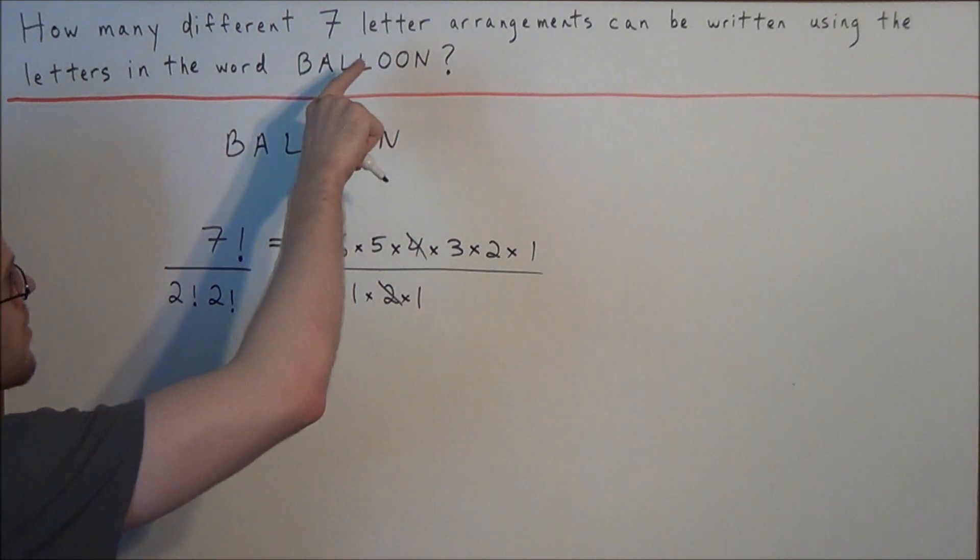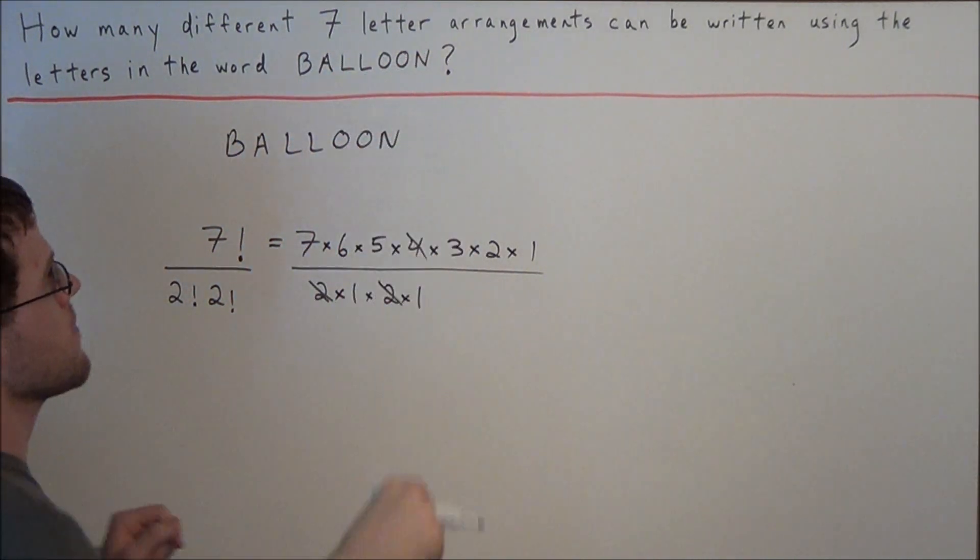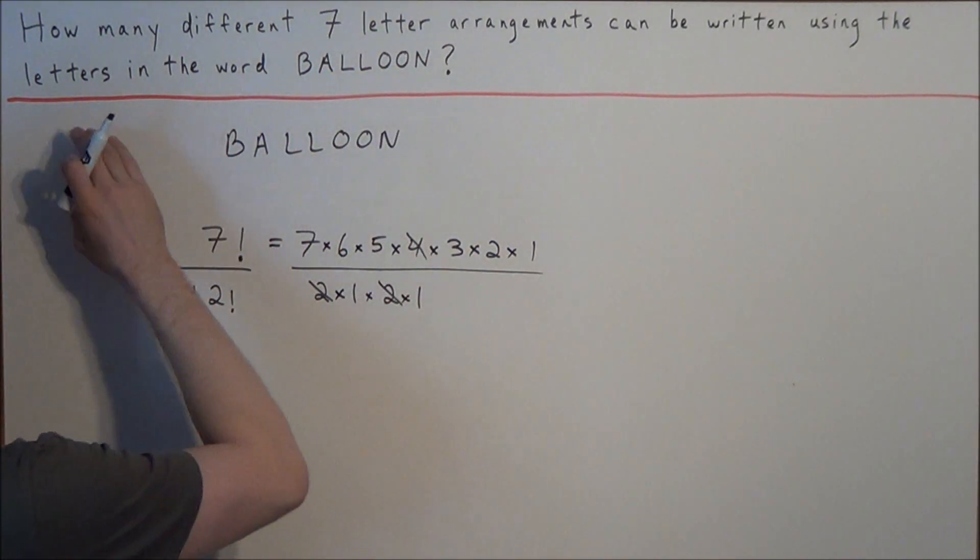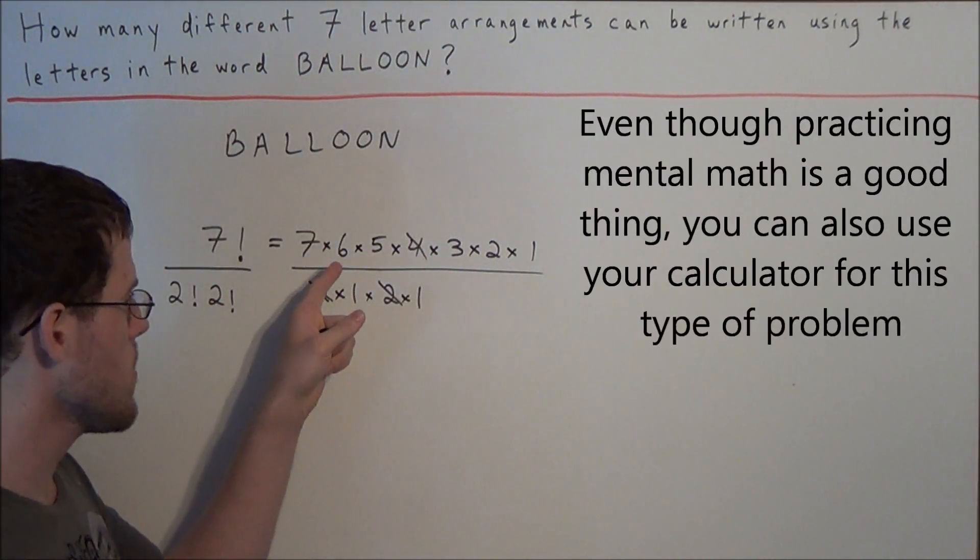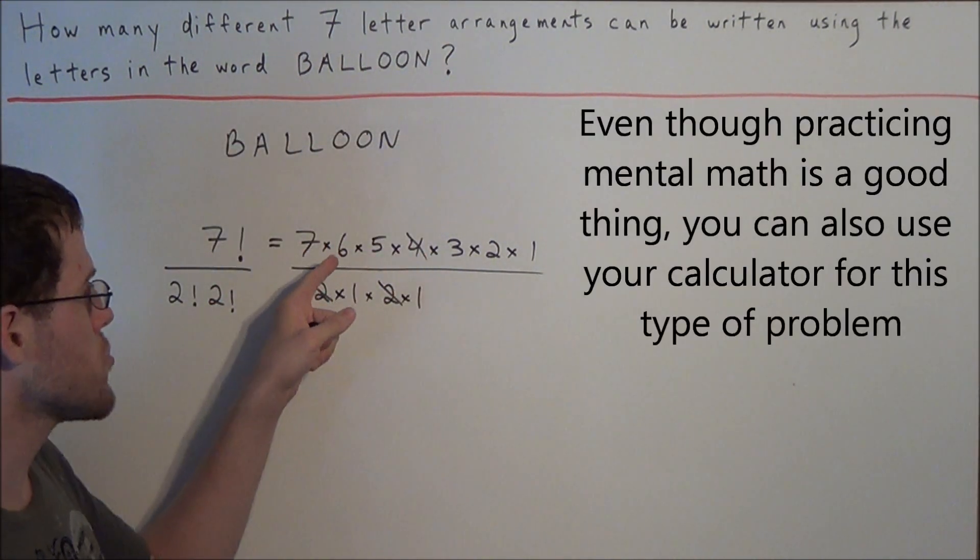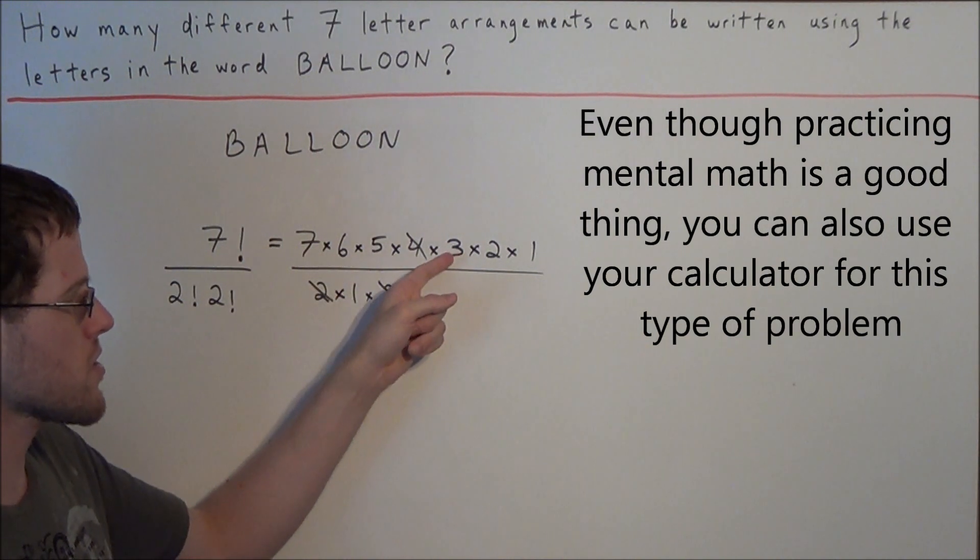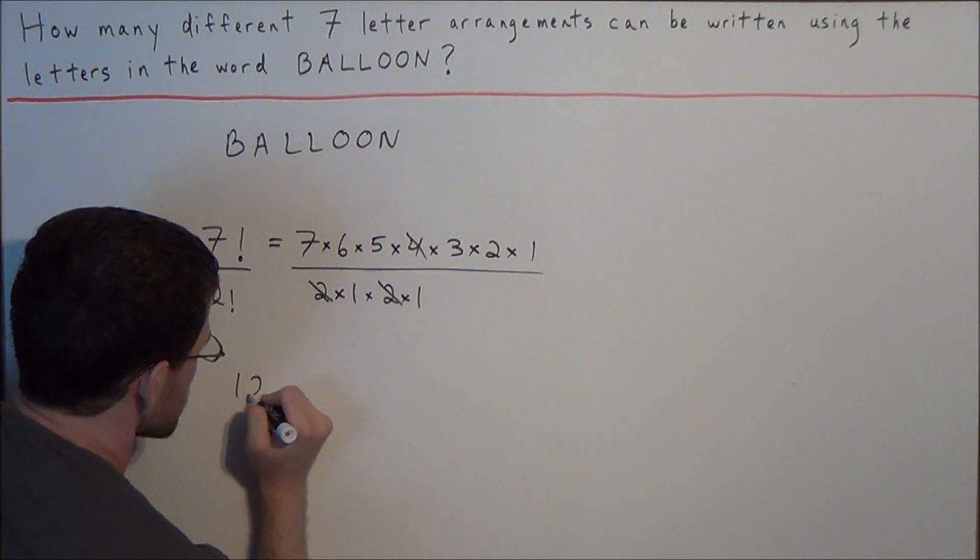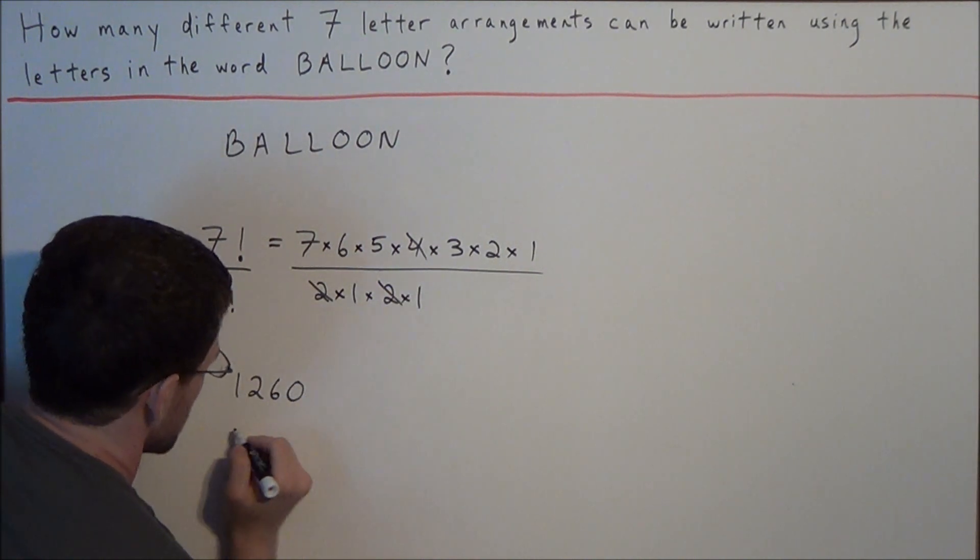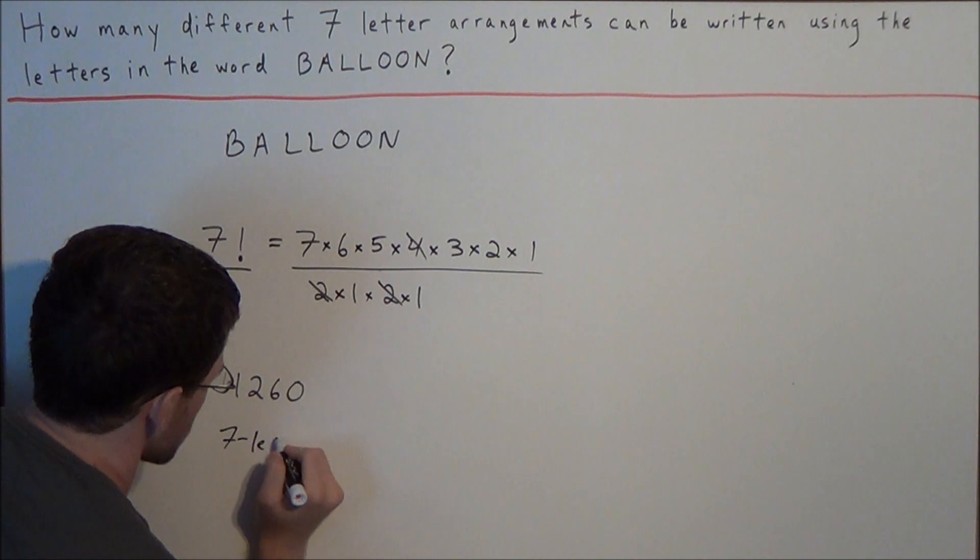So now if we want to find our answer, the number of seven letter arrangements using the letters in the word balloon, we have 7 × 6 is 42, 42 × 5 is 210, 210 × 3 is 630, and 630 × 2 is 1260. So there are 1260 seven letter arrangements.